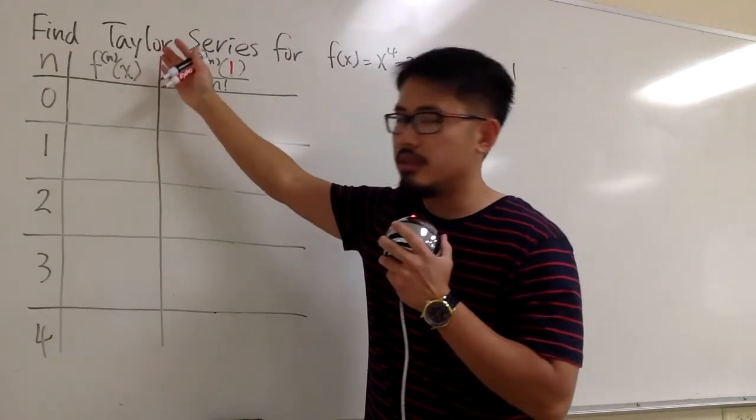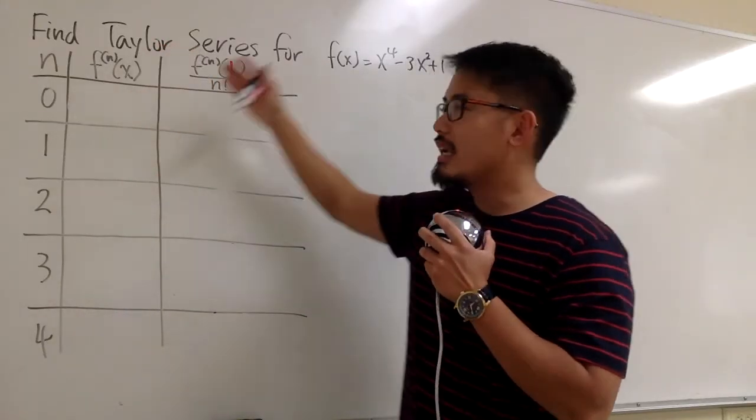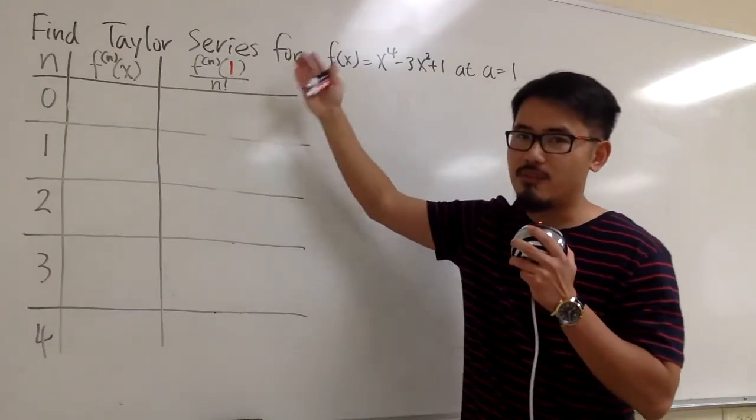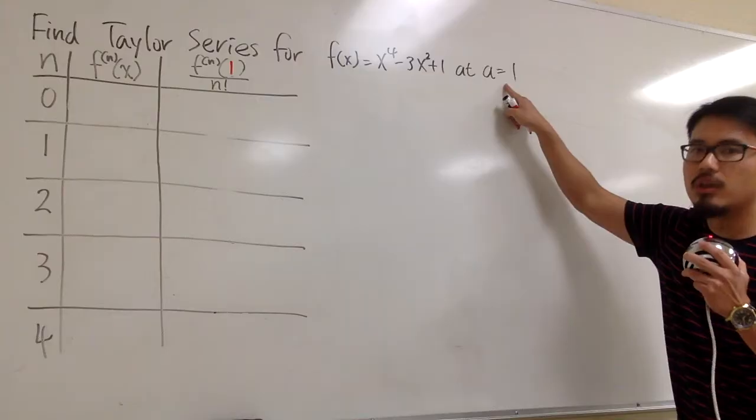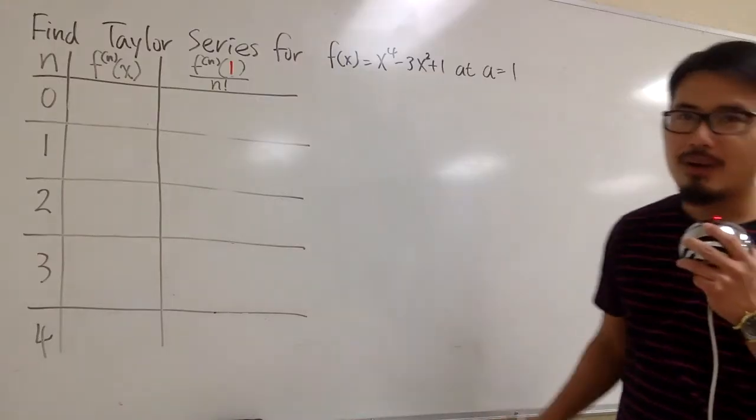For the second column, I put down the nth derivative of the function. At the end, we have to work out the Taylor formula. You see that we plug in 1 right here because the question says so, a is equal to 1. And now, let's just get to work.